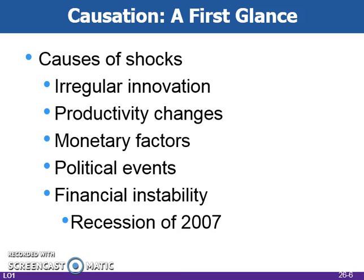The last shock, financial instability, was the most recent cause of a contraction. Rapid asset price increases or decreases can spill over to the general economy and cause booms and busts. The recession of 2007 was led by excessive money, overvalued real estate, and unsustainable mortgage debt.